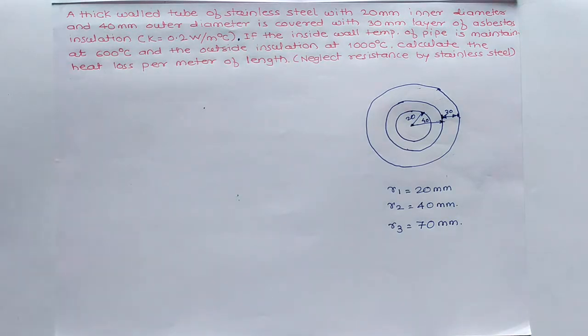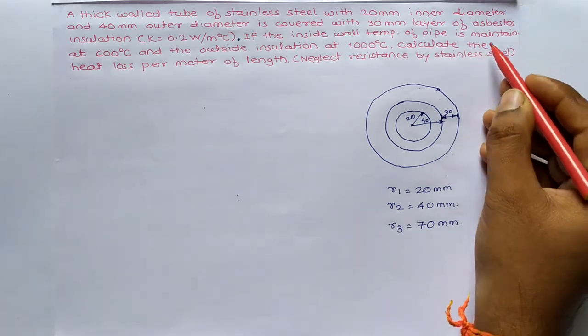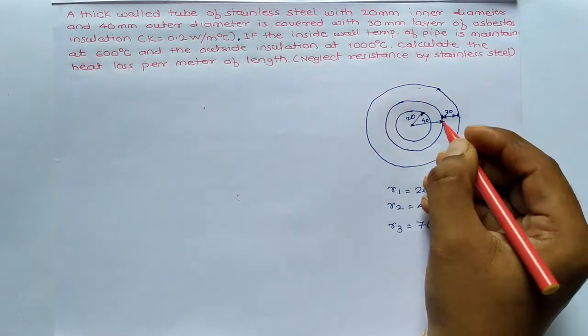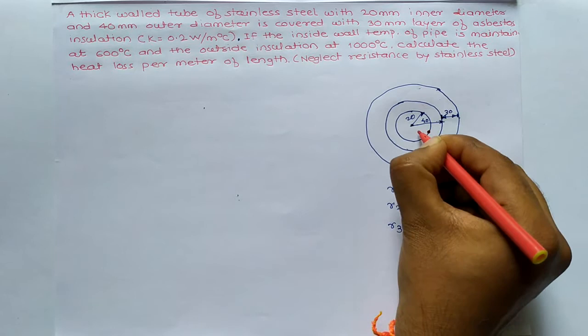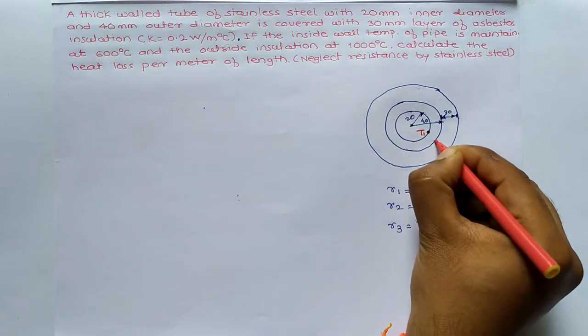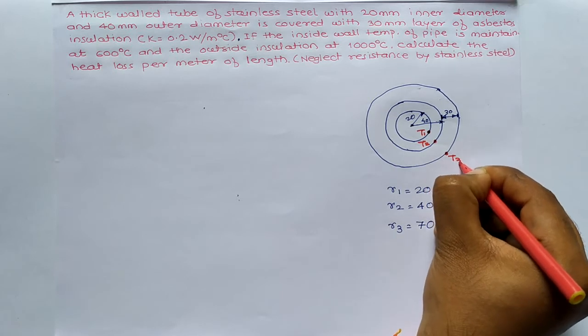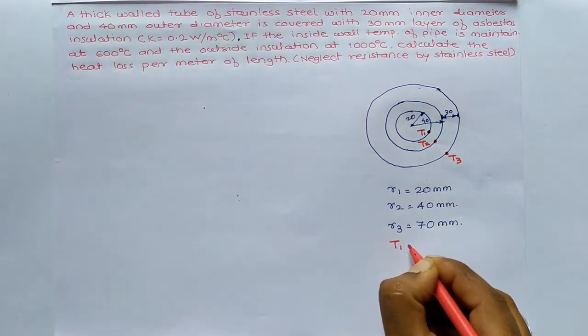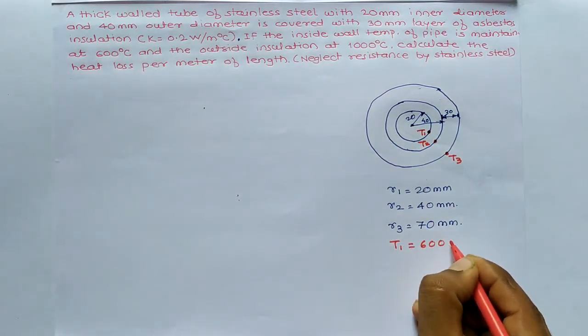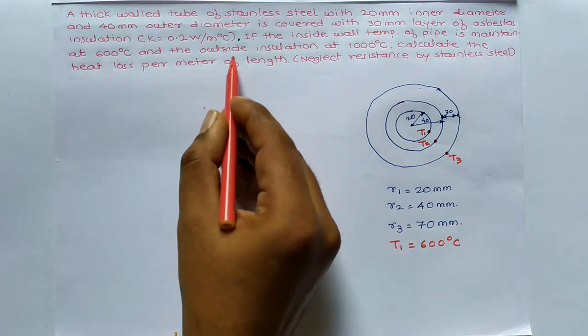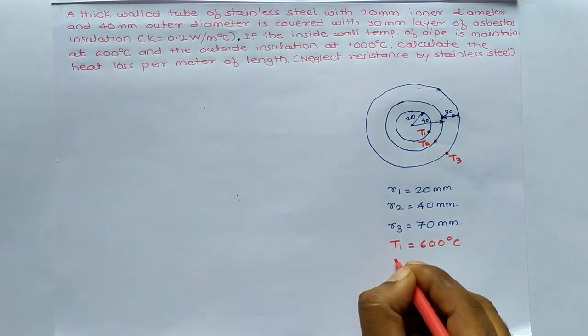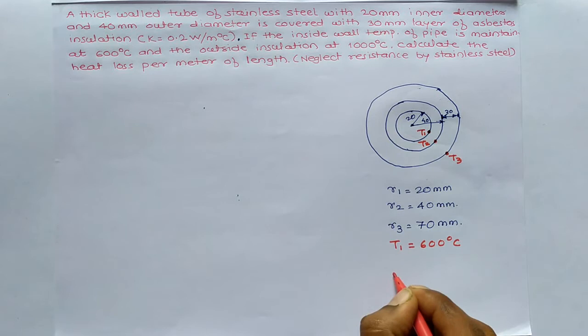Now, if the inside wall temperature of pipe is maintained at 600 degrees Celsius. Inside, if I call T1, the interface is at T2 and outside face is at T3. Now, T1 they have given 600 degrees Celsius and outside insulation, outside means this, T3.